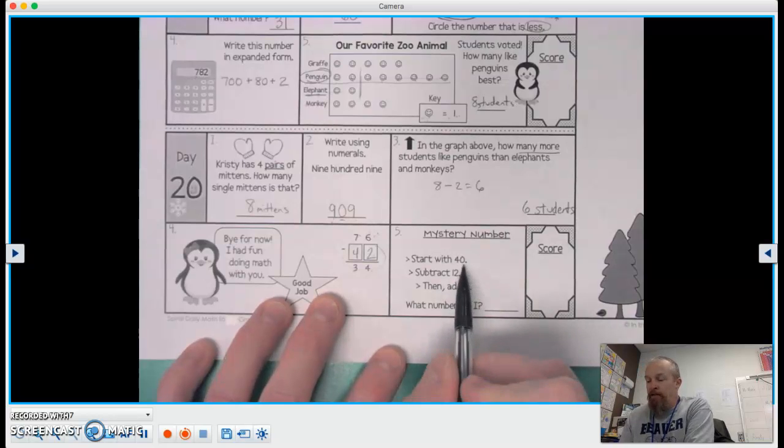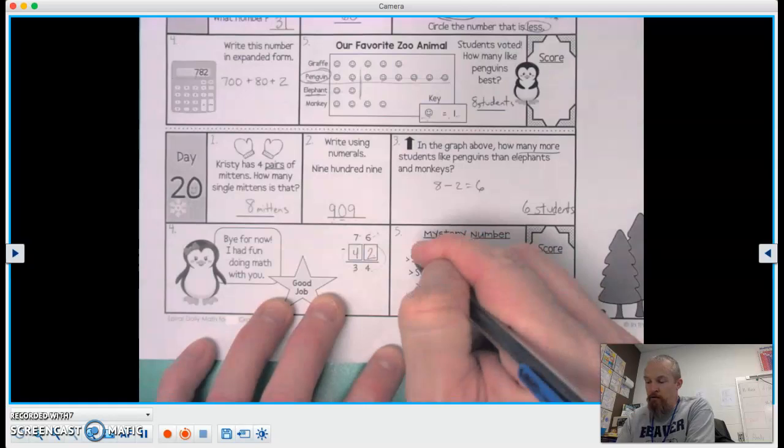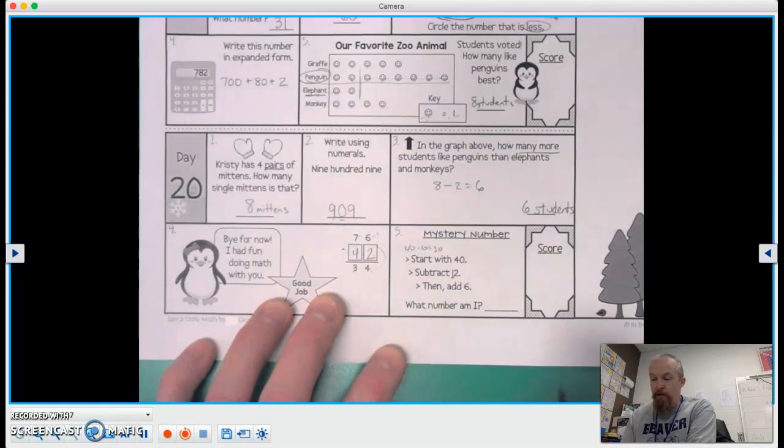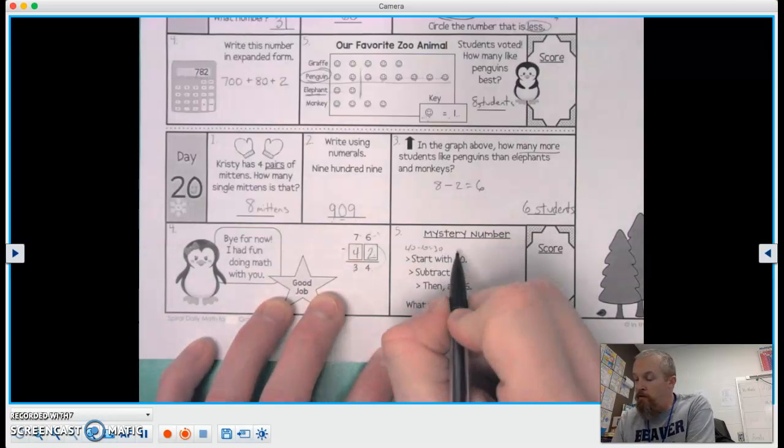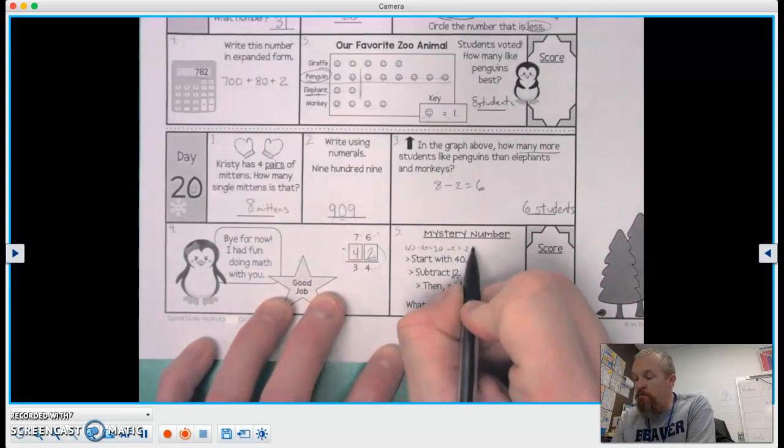Well, if I have 40 and I subtract 10, that makes it 30, right? So I'm going to go 40 minus 10 equals 30. And then I'm going to subtract two from 30. So minus two equals 28.